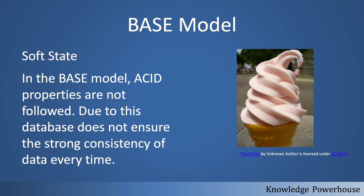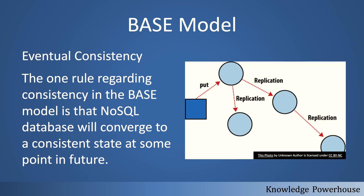The second part is Soft State. In the BASE model, ACID properties are not followed, so the database may not have strong consistency. Consistency means that all rules, constraints, and business rules of the database are followed. In a distributed system following the BASE model, all those rules may not be followed by all nodes. It is the responsibility of the software developers to provide data consistency in the system, as the database does not guarantee strong consistency.